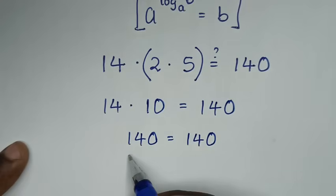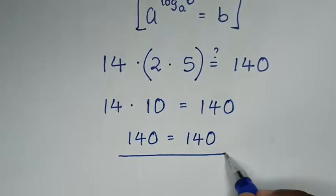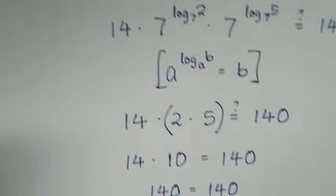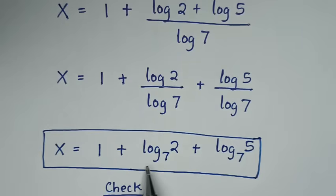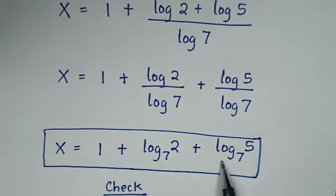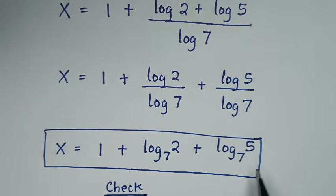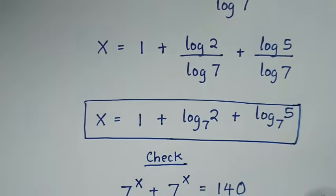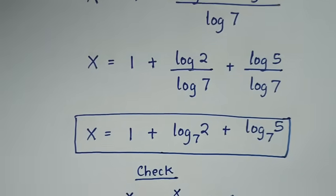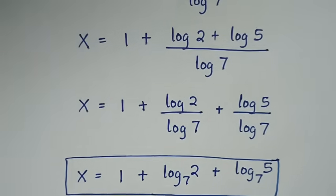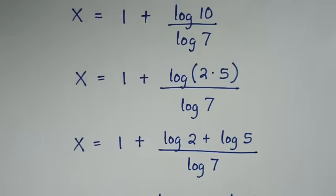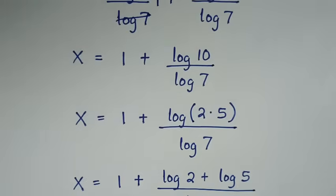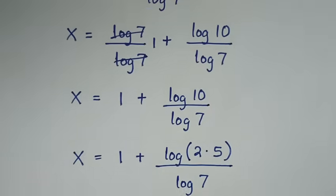Left side and right side are equal, so the value of x is confirmed as 1 plus log base 7 of 2 plus log base 7 of 5. Thank you for watching. Don't forget to subscribe to my channel and see you in the next video. Bye bye.